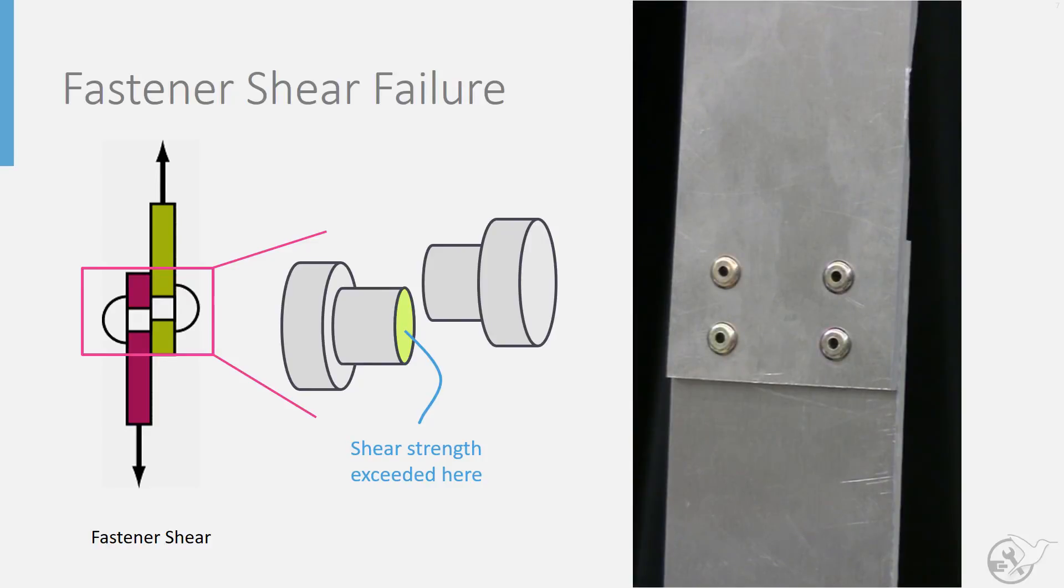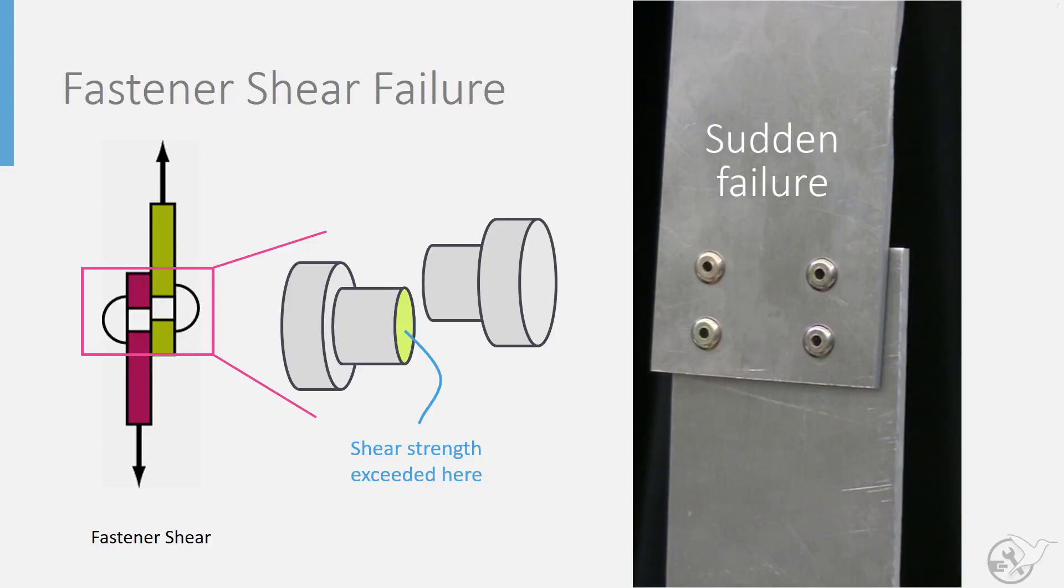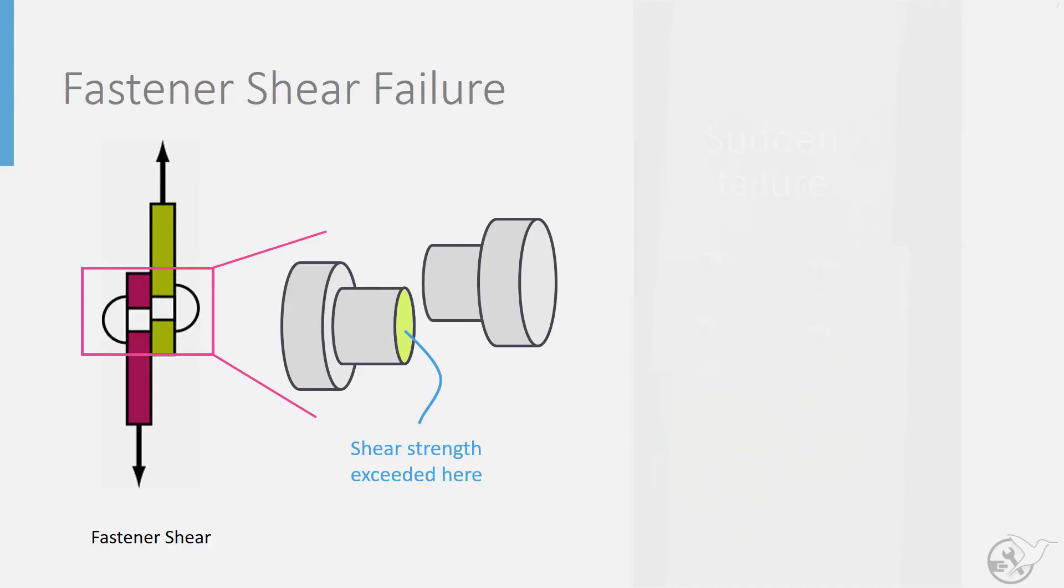This failure mode is typically unstable, as if one fastener fails, load on all the other fasteners increases, leading to their immediate failure. Such an unstable failure is another reason why this failure mode is undesirable.